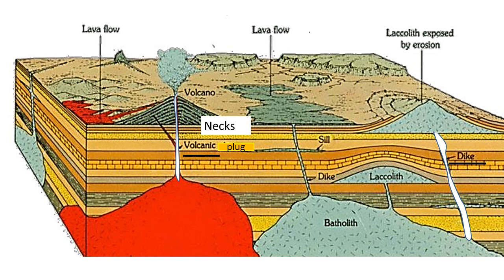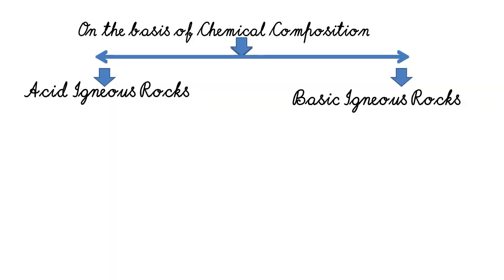Intrusive igneous rocks are also called plutonic rocks because of the slow cooling of magma at great depth, which leads to the formation of large-sized crystals. When magma cools at intermediate depth and forms minor rocks like sills and dykes, it is called hypabyssal rocks.